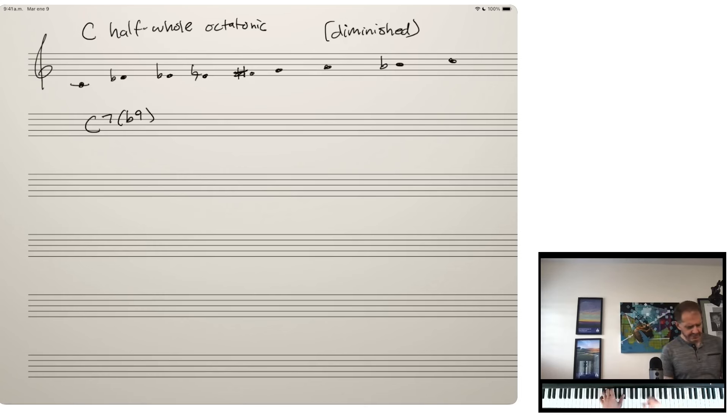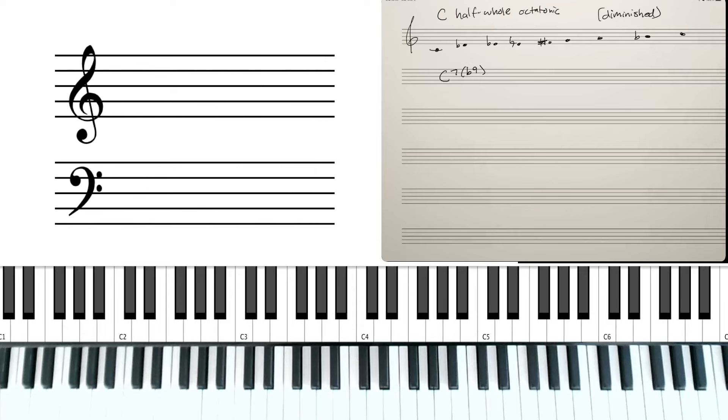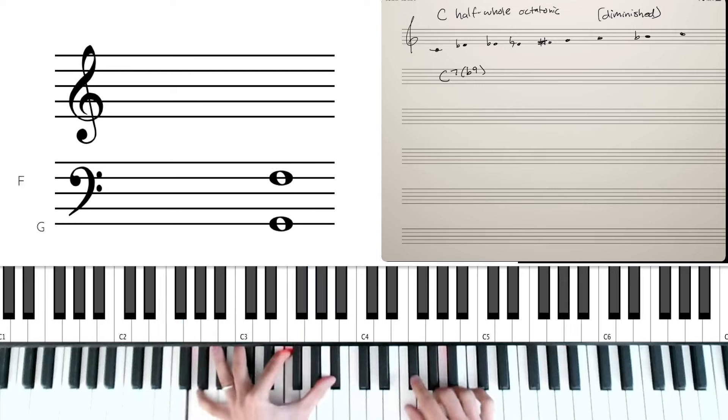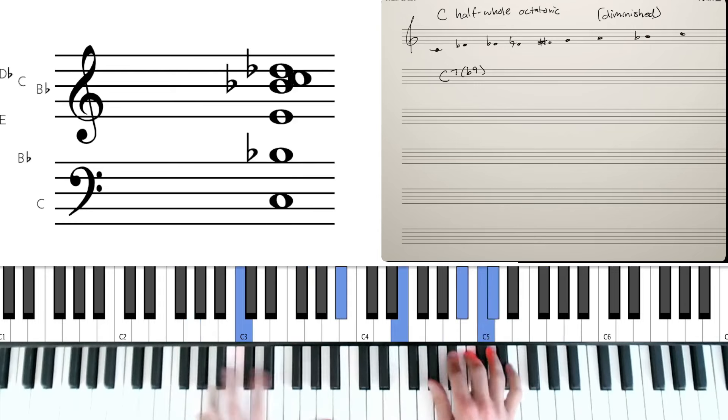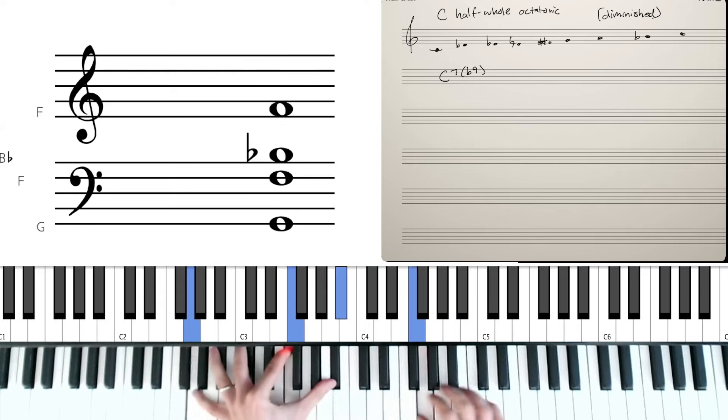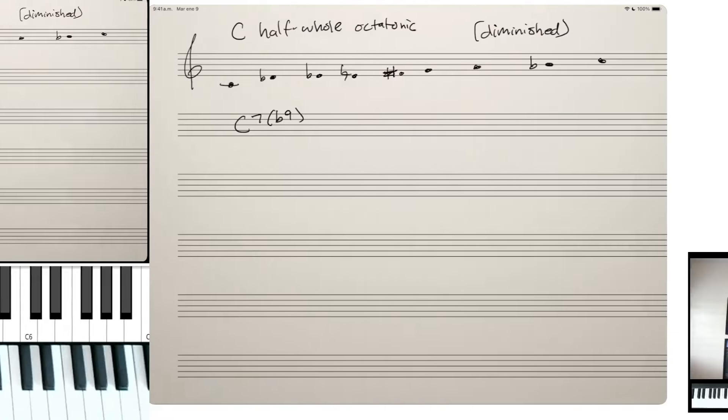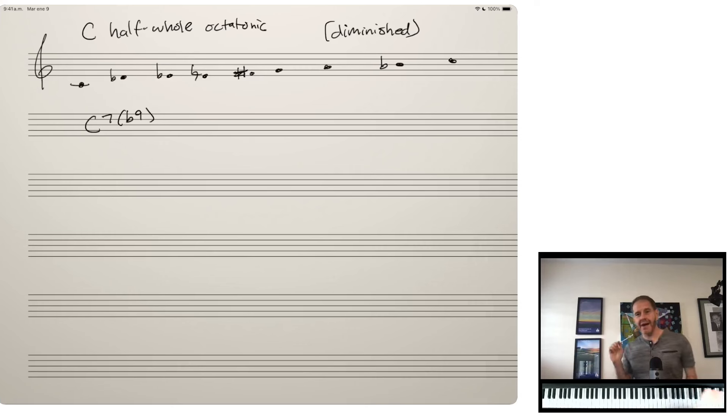So let's do it one more time. Okay, so really useful scale. Just about every jazz pianist through history, especially from the 1940s and 50s and beyond, uses this scale in some way or another. Like Bill Evans, if he's improvising over a 2-5-1, is going to use some versions of this scale.